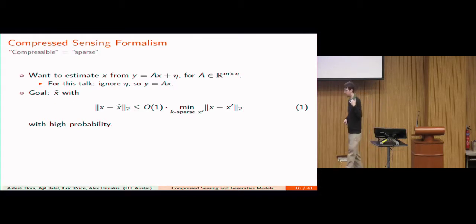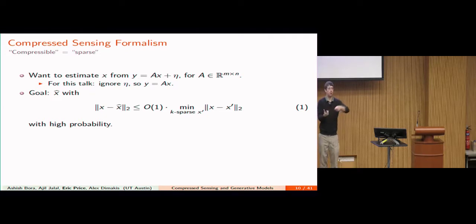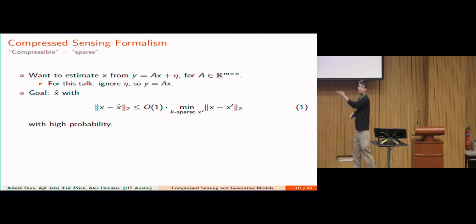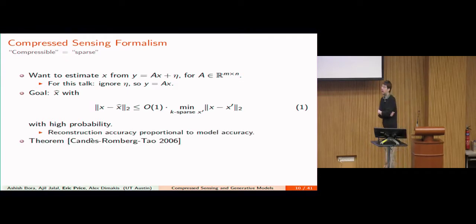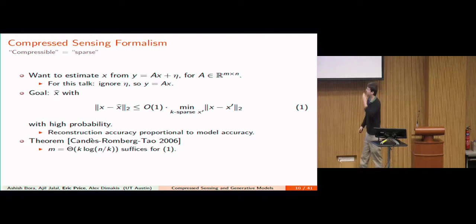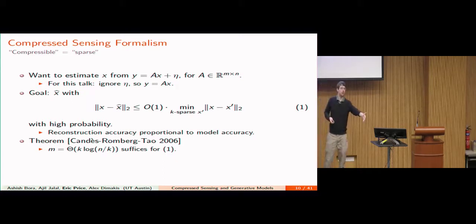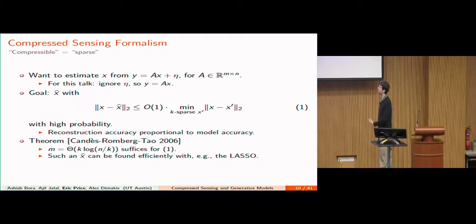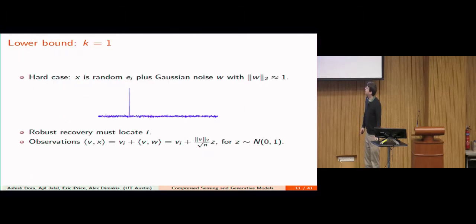The theorem by Candès, Romberg, and Tao is that this recovery is possible and can be done efficiently with the expected number of measurements — O(k log(n/k)). If you only need 1% of coordinates to do recovery, you save roughly a factor of 1%/log(1%) in measurements. This is in fact optimal.